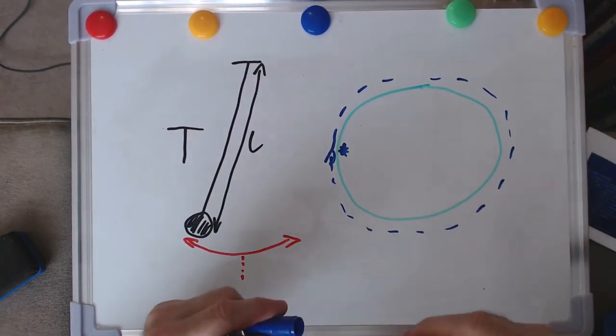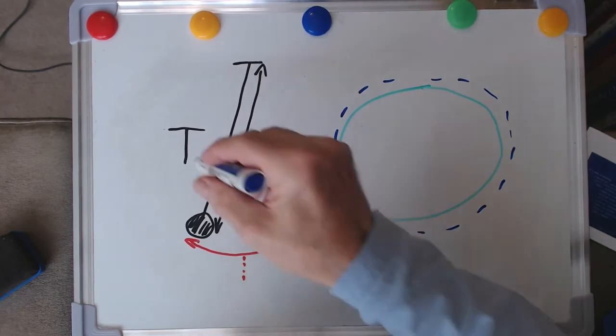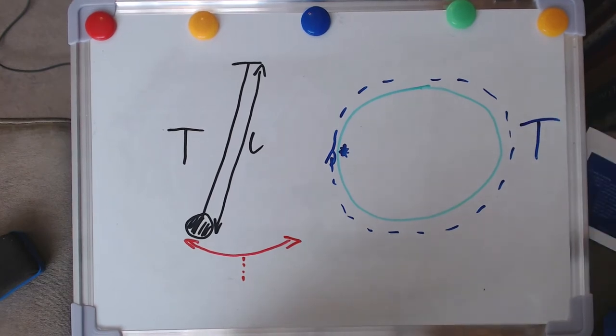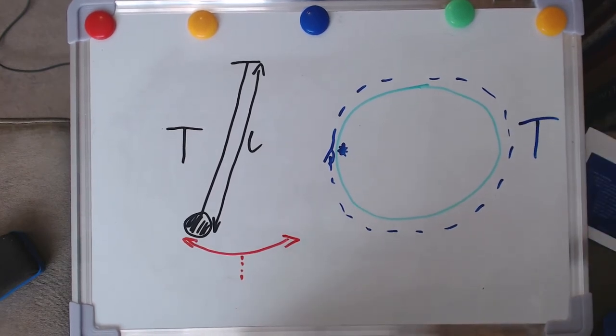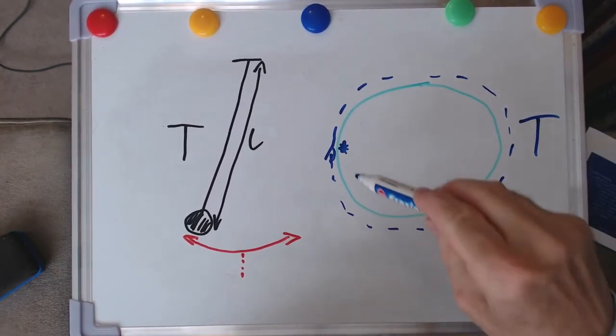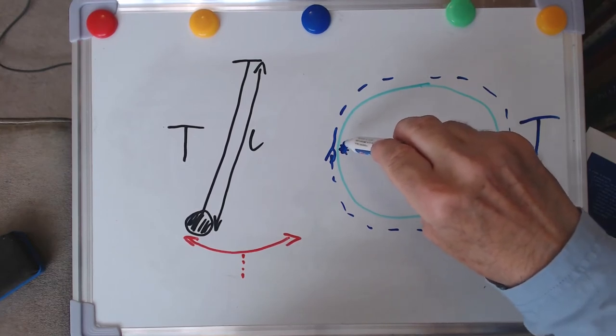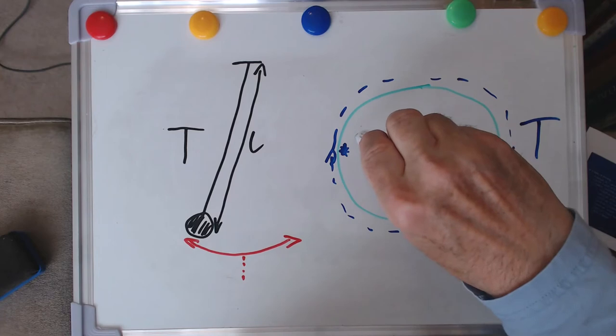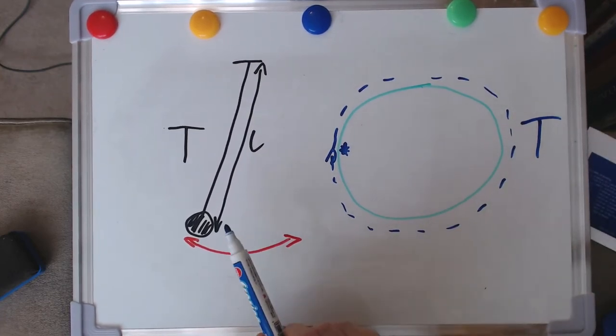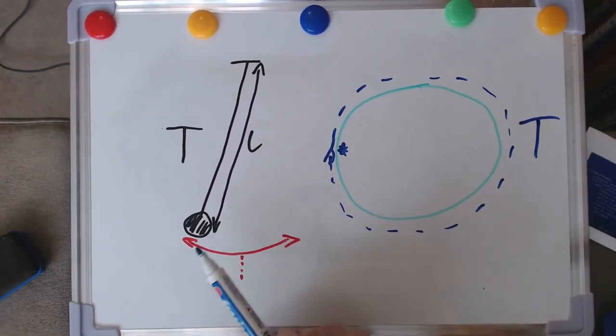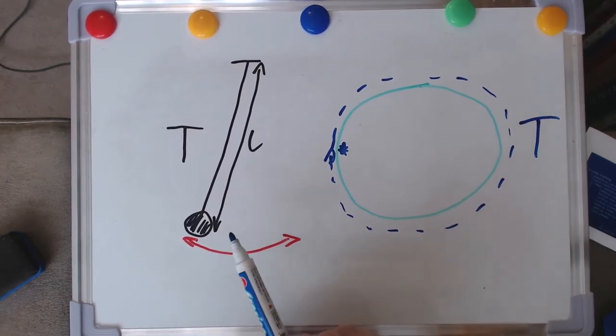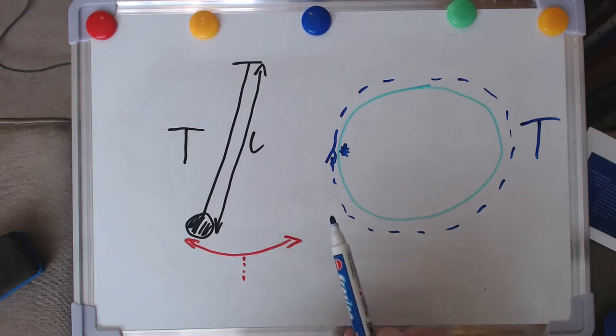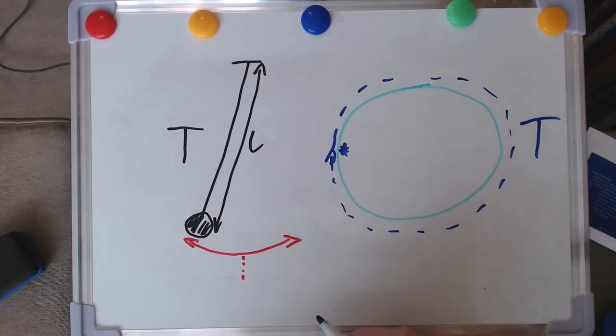And actually we're going to label that with exactly the same symbol as we use for our pendulum. So what we're going to find is that we can take the very simple equations associated with something moving around in a circle and apply with a few nips and tucks that equation to this swing from side to side of the pendulum, which is a lot more complex.